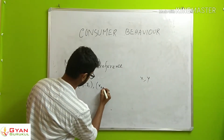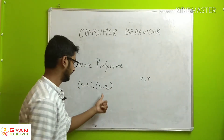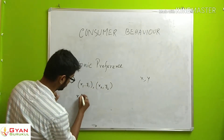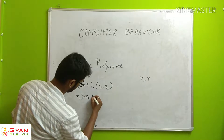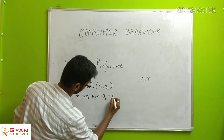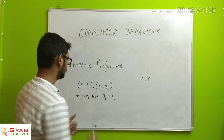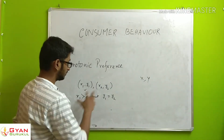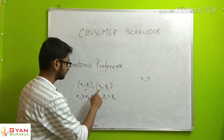Next, consider bundle X2 and Y2. So in two situations: X1 is greater than X2, but Y1 is equal to Y2. In that case, the consumer will prefer the first bundle over the second.